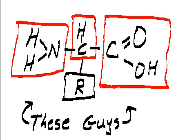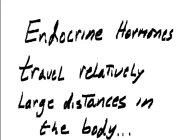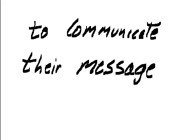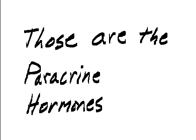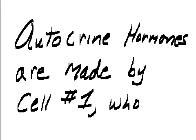Here you have an amino acid: H₂N-CH(-R)-COOH — with the amine group, the carbon, the carboxyl group, and the R group. That's your amino acid. Endocrine hormones travel relatively large distances in the body to communicate their message; others stay local — those are the paracrine hormones.